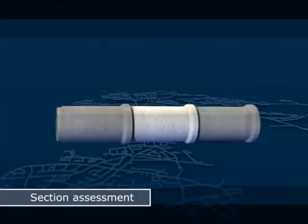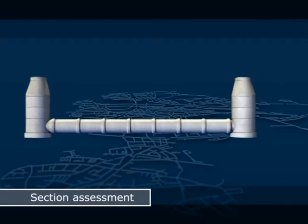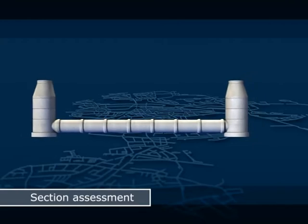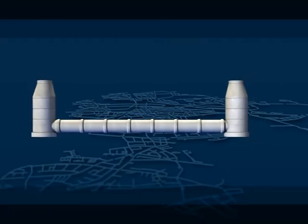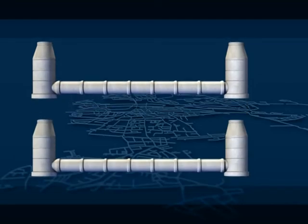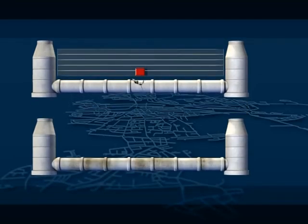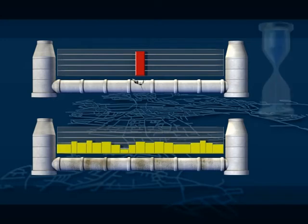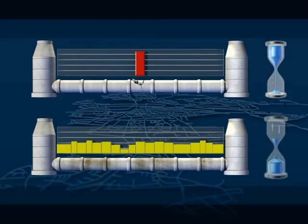The damage assessment is the basement, and followed by the section assessment, which is divided into condition assessment and assessment of the substance. The condition indicates the priority of action, whereas the substance, standing for the wear reserve, reveals the type of action, such as repair, rehabilitation or replacement.